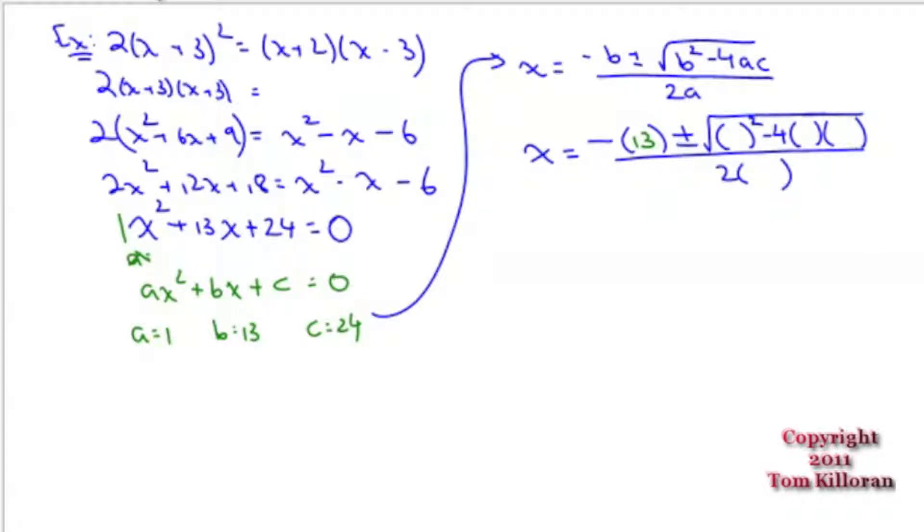What's b equal to in this case? 13. So 13 goes in here and here. What's A? 1. What's C? 24. And then finally down here is a again, which is 1. The parentheses are very useful. If it's a negative number, you really want those parentheses to be there. This becomes x equals negative 13 plus or minus the square root of 169 minus 96 all over 2. 169 minus 96 is 73. So x equals negative 13 plus or minus the square root of 73 all over 2. And then of course you can type it into your calculator.